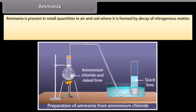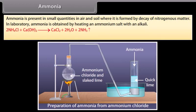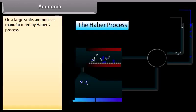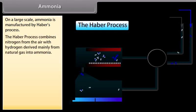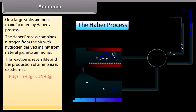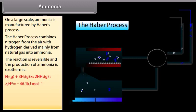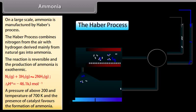Ammonia is present in small quantities in air and soil, where it is formed by the decay of nitrogenous matter. In the laboratory, ammonia is obtained by heating an ammonium salt with an alkali, and is dried by passing over quicklime. On a large scale, ammonia is manufactured by Haber's process, which combines nitrogen from the air with hydrogen derived mainly from natural gas. The reaction is reversible and the production of ammonia is exothermic.